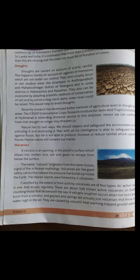Droughts are caused on account of scanty rain, which happens mostly due to the vagaries of the monsoon, which are not under our control. They usually occur in rain shadow areas like Anantapur and Mahabubnagar in Telangana, Anantapur in Andhra Pradesh, and in some districts of Maharashtra and Rajasthan. They can be overcome by adopting scientific methods of conservation of soil and by constructing check dams. ICRISAT — the International Crops Research Institute for the Semi-Arid Tropics — established at Hyderabad, is extending immense service in this direction. Hence, we can confidently hope that drought may no longer threaten us.